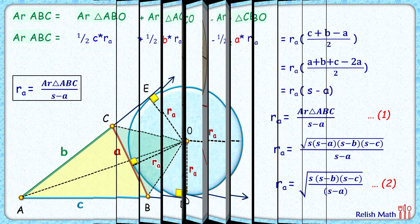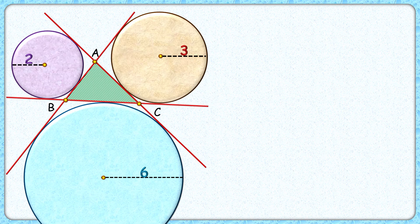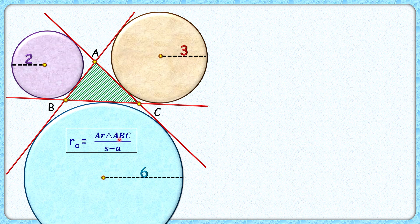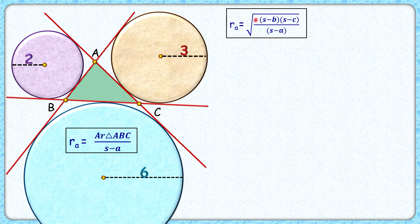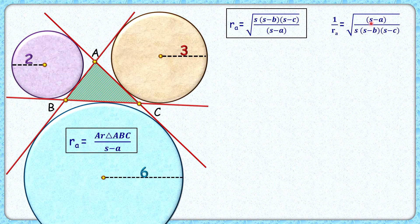In part one we derived the formula for the excircle radius: for vertex A the excircle radius ra equals either Area/(s−a), or √(s·(s−b)·(s−c)/(s−a)). For the second derivation we'll use this second formula. Taking the reciprocal of ra gives 1/ra = √((s−a) / (s·(s−b)·(s−c))).